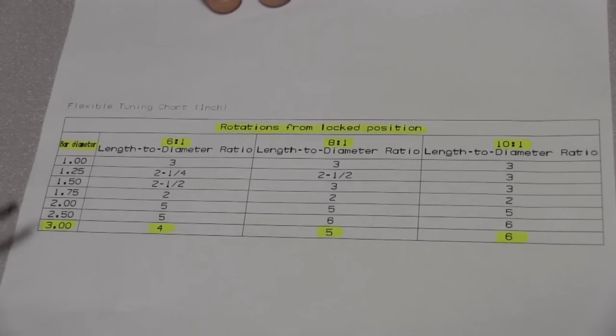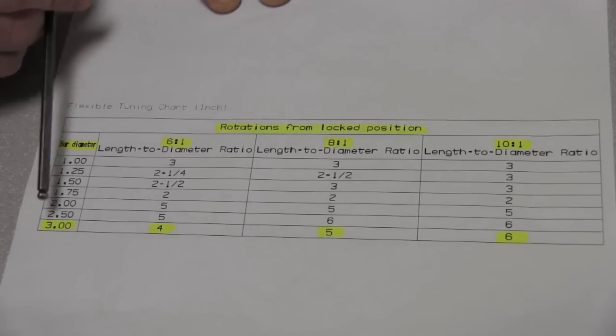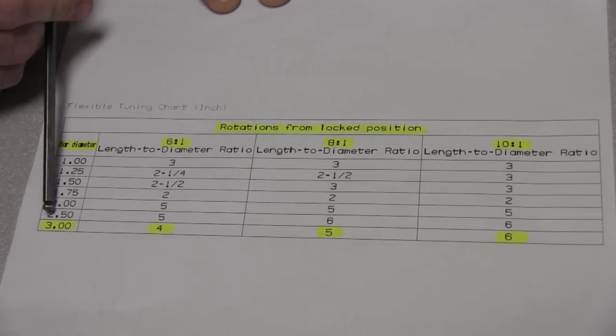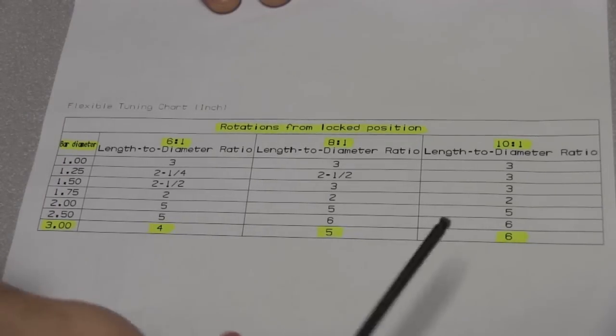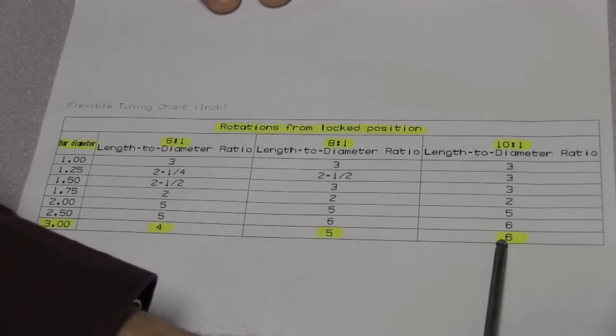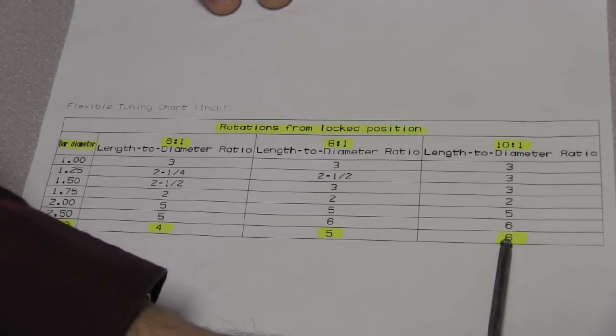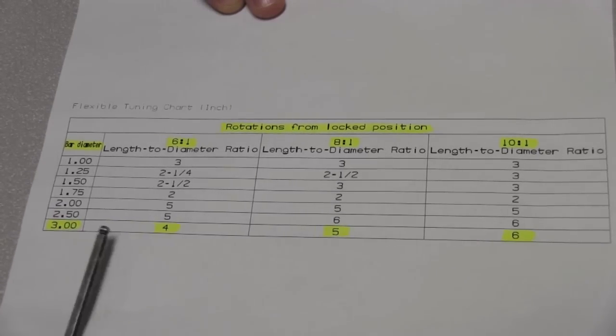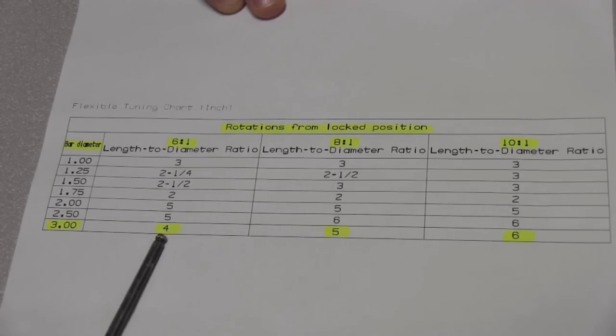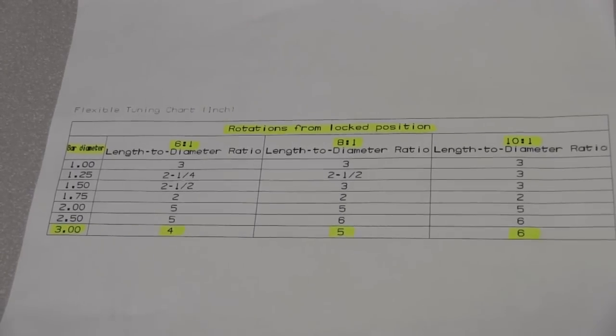Now for today's video, say we're adjusting a 3 inch diameter bar. So using that, it shows here that this bar should be set at 6 turns counter-clockwise out from a lock position. Now what we want to get to is a 6 to 1, so we're going to want to go to 4 turns out. So knowing that, let's go ahead and get started.